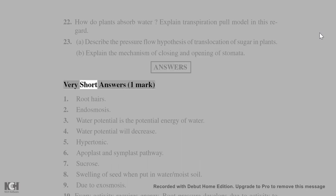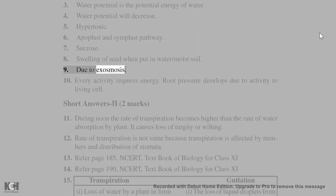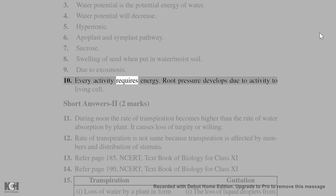Answers. Very short answers, 1 mark. 1. Root hairs. 2. Endosmosis. 3. Water potential is the potential energy of water. 4. Water potential will decrease. 5. Hypertonic. 6. Apoplast and symplast pathway. 7. Sucrose. 8. Swelling of seed when put in water/moist soil. 9. Due to exosmosis. 10. Every activity requires energy. Root pressure develops due to activity of living cells.